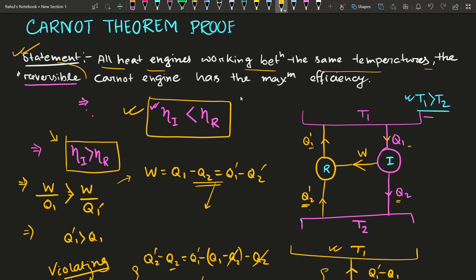So the correct result is that eta_i is always less than eta_R. This proves the Carnot theorem: among all heat engines working between the same temperatures, the reversible Carnot engine has the maximum efficiency. I hope you understood what Carnot theorem means and how to prove it. To get notifications of my upcoming videos, please subscribe to this channel and hit the bell icon. Take care of yourself, thanks for watching.